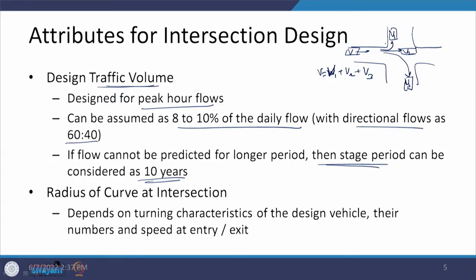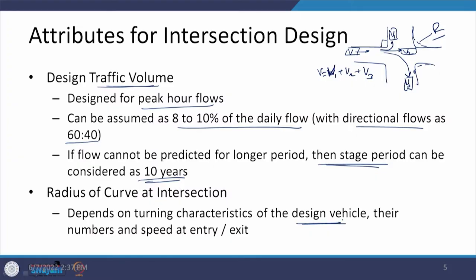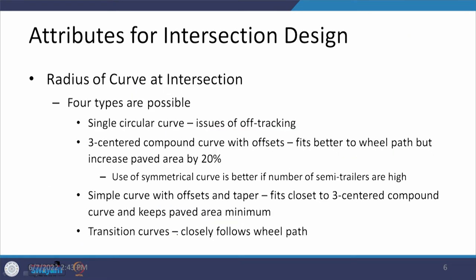A location may not be at 90 degrees and may be in the form of a curved section with radius r. This curved section depends on the vehicles negotiating it — the size of the vehicle, the speed at which they move, and their base length. We need to take a decision on the design vehicle and see how many such vehicles are coming. There may be a compromise to the next category, and we also consider the speed at entry or exit.